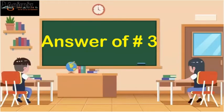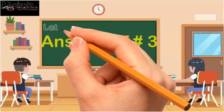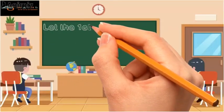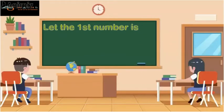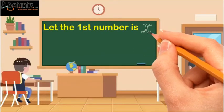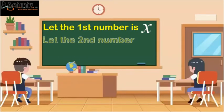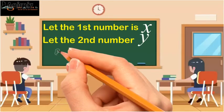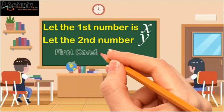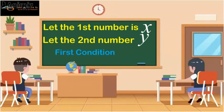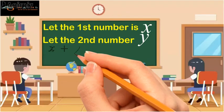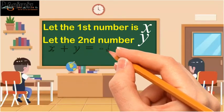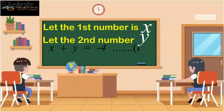Answer of question number 3. Let the first number be x and the second number be y. Now making use of the conditions of the problem, the first condition says that the sum of the numbers is minus 4. So we will write x plus y equal to minus 4. Say this is our equation number 1.